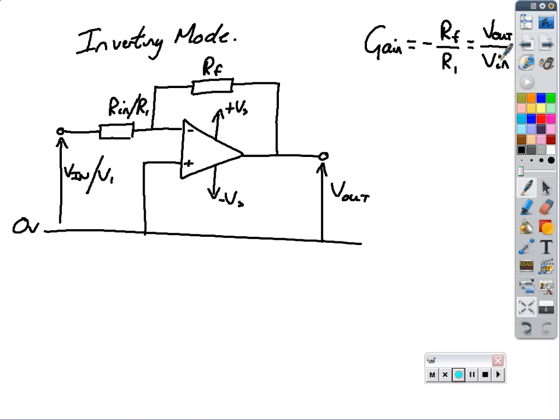This leads us on to what's the actual formula for an inverting amplifier, which you're given in the exam. You don't have to remember it, but you do need to remember which part of the formula is the gain. The gain is negative RF over R1.